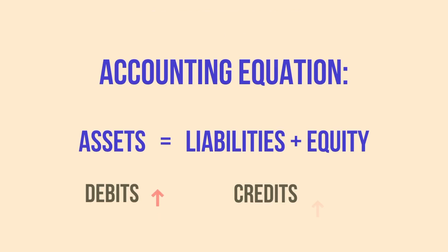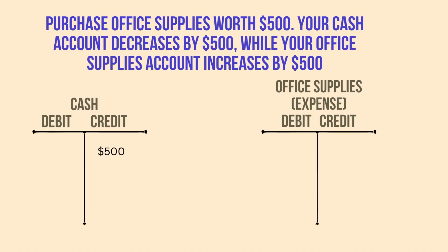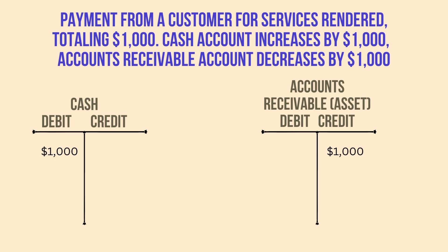In the land of accounting, debits increase the left side of the balance sheet, which is assets, and credits increase the right side, which is liabilities and equity. For example, if you're a small business owner and you purchase office supplies worth $500, your cash account decreases by $500, which is a credit, while your office supplies account increases by $500, which is a debit. These debits and credits ensure that the equation stays balanced.